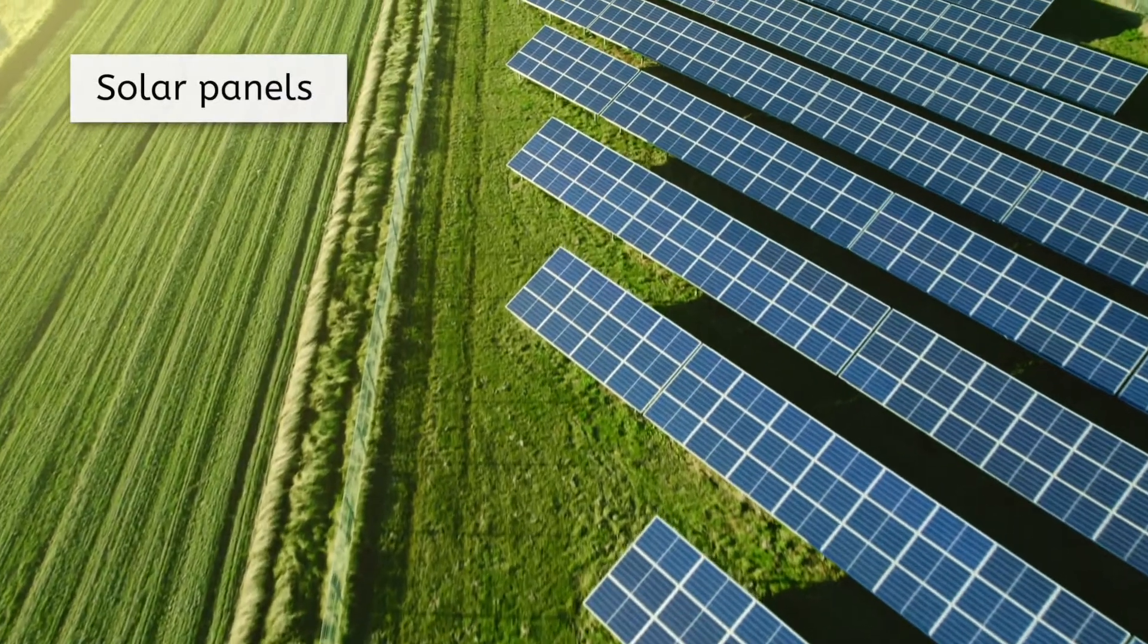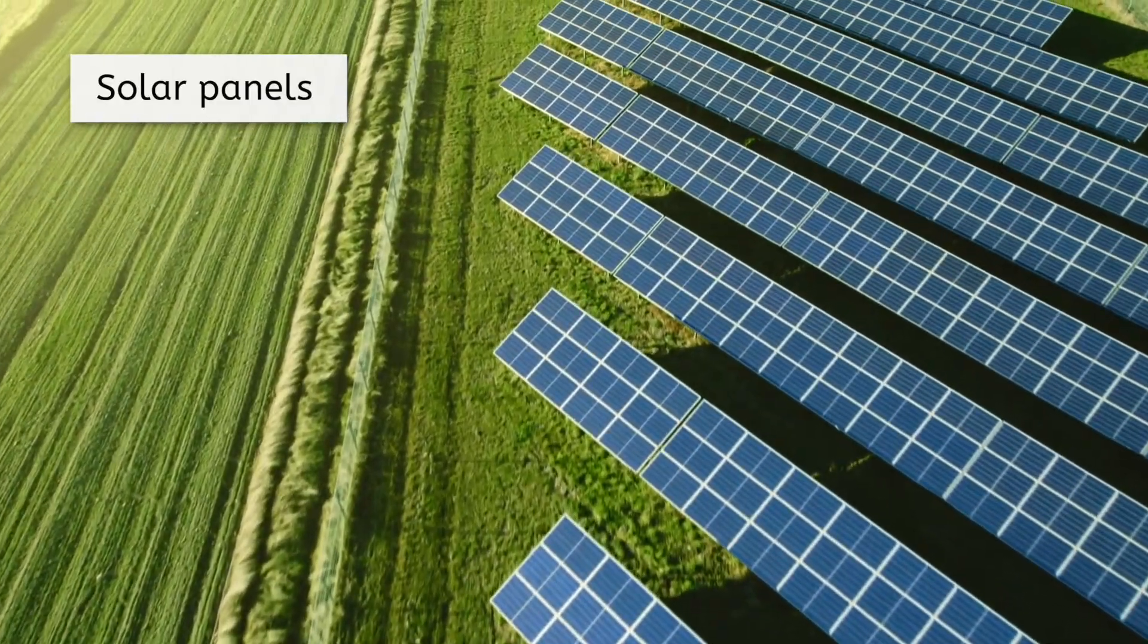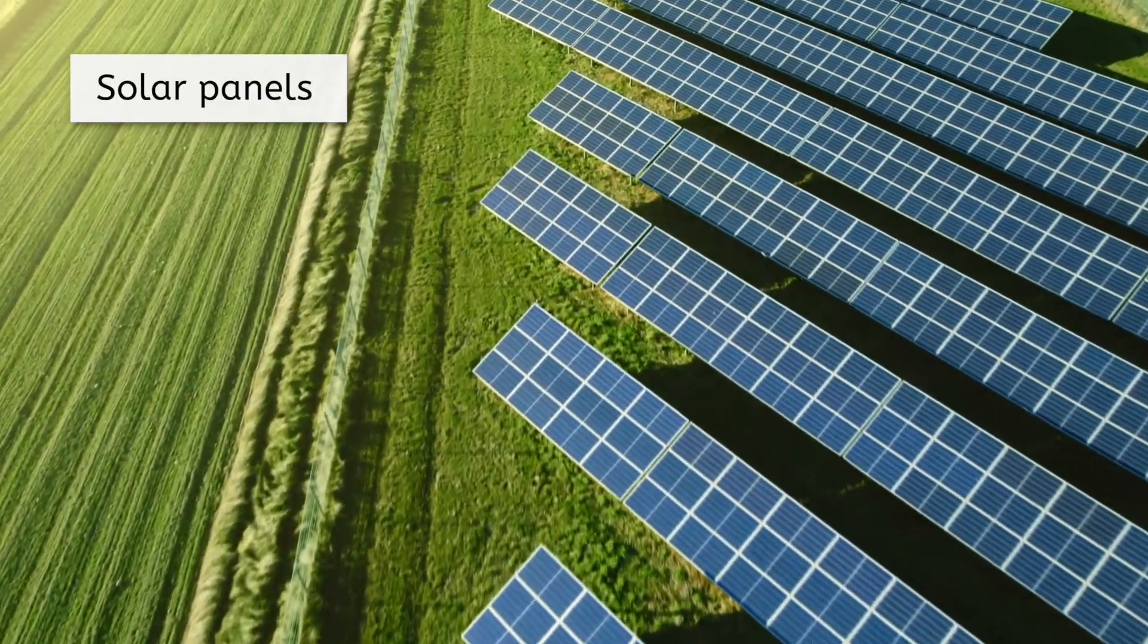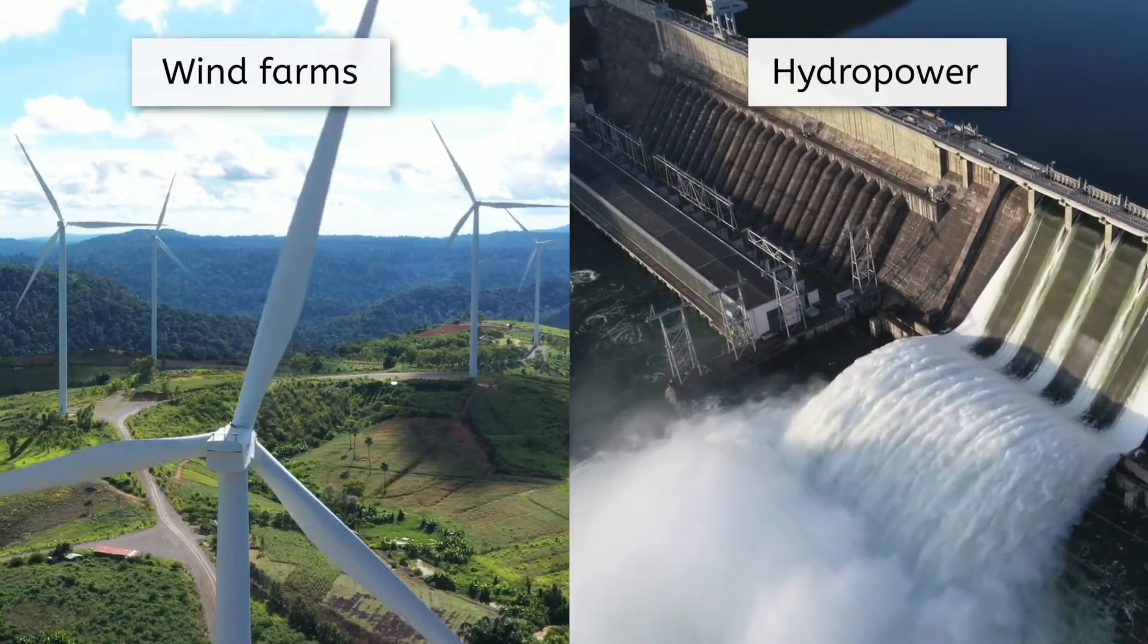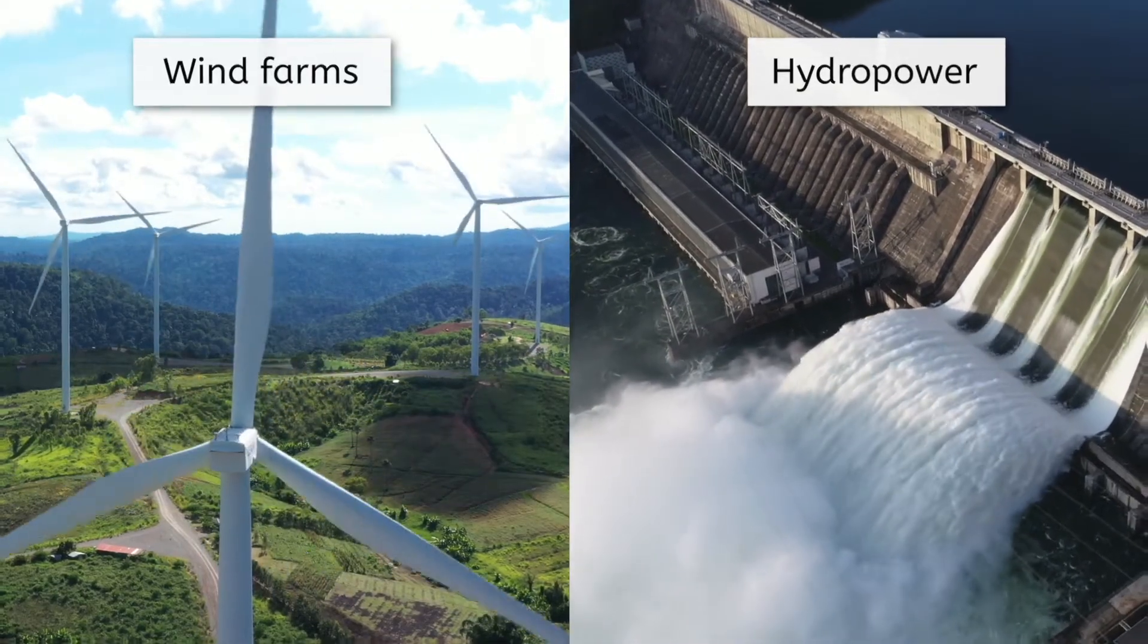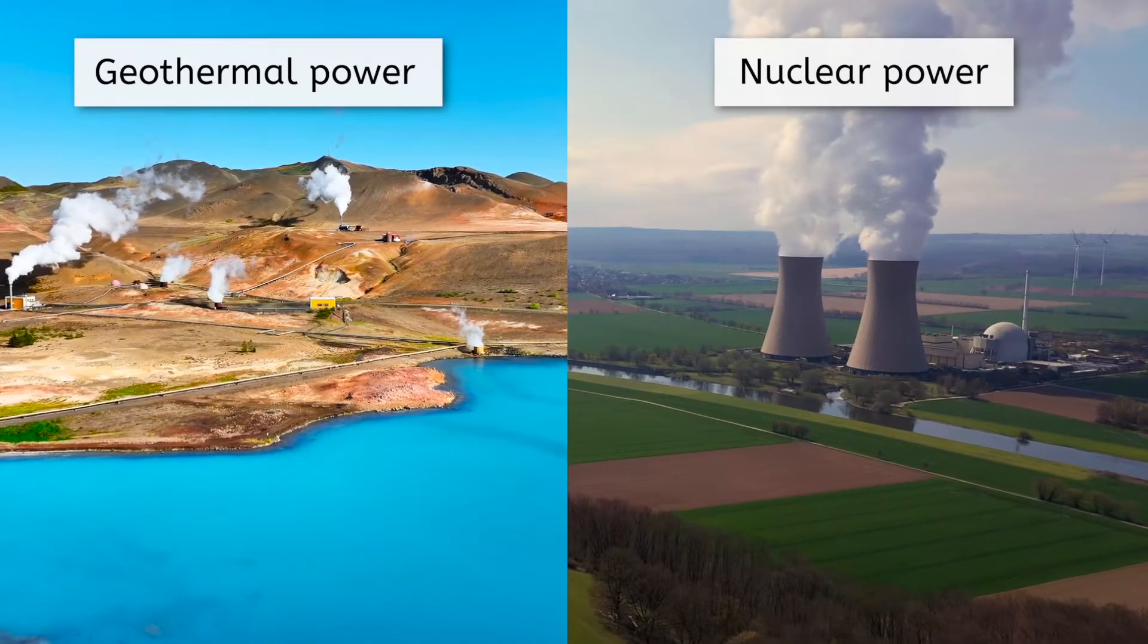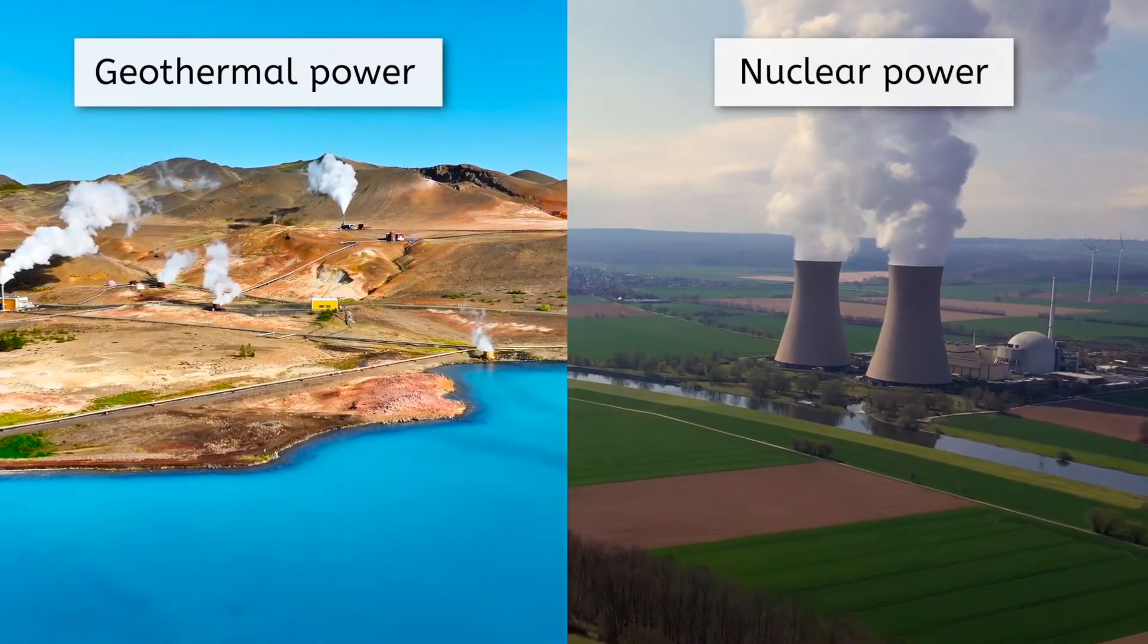Cleaner methods of electrical energy production include capturing radiant energy from the sun directly with solar panels, turning the kinetic energy of wind and water into electricity with wind farms and hydropower dams, and using Earth's own raw materials and heat to run nuclear or geothermal power plants.